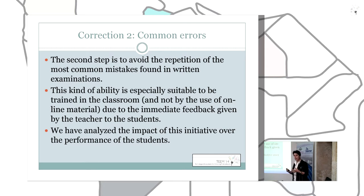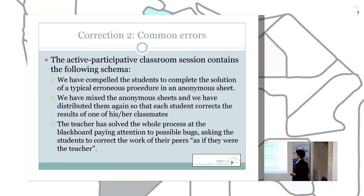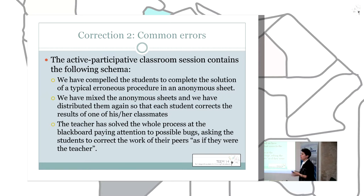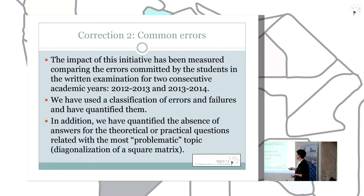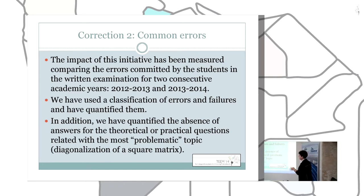So we designed classroom sessions and then analyzed the impact of this initiative. Each session follows this schema: we ask students to complete the solution of a procedure that contains a typical error, written on an anonymous sheet. Then we collect the sheets, mix them, and redistribute them. Each student then corrects another student's work as if they were the teacher. The teacher then solves the problem at the blackboard, pointing out where the error is and asking students to correct the sheet they received accordingly. We then measured the impact of this initiative by comparing errors across two consecutive academic years, using a classification of errors to quantify the results.